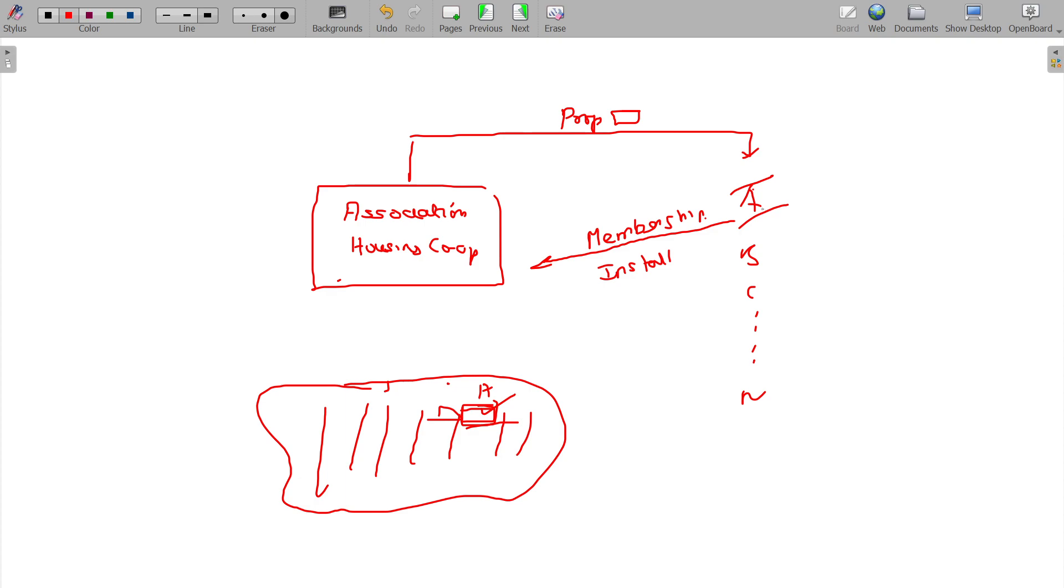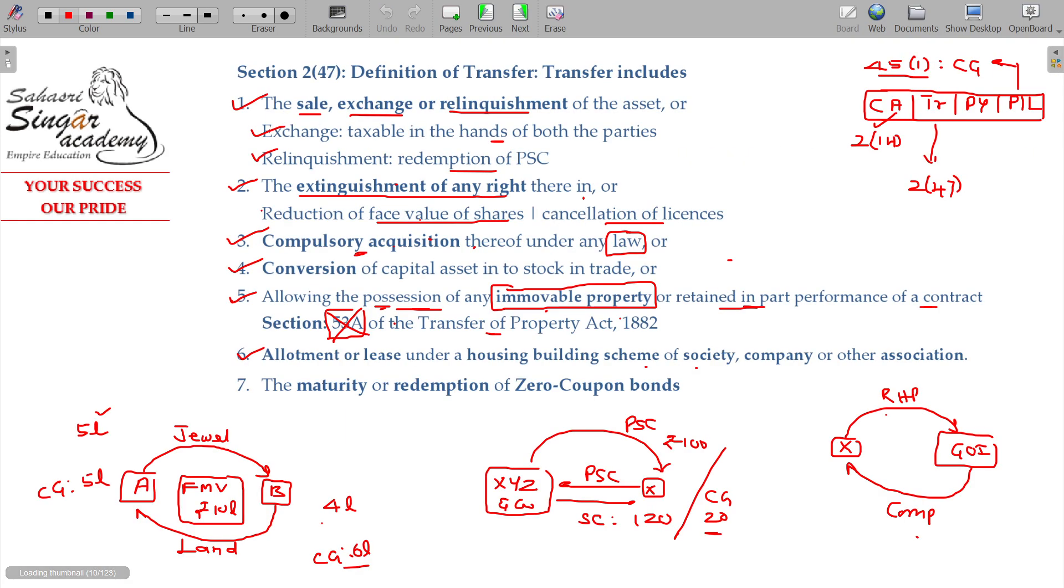Last installment payment is transfer. But in capital gains tax, when does the transfer happen? The moment the association transfers possession. Even if part amount is still pending, it is transfer. So allotment in a housing cooperative society - for collecting membership, a small amount is collected, and lease will be collected later. That allotment will also be considered as transfer.